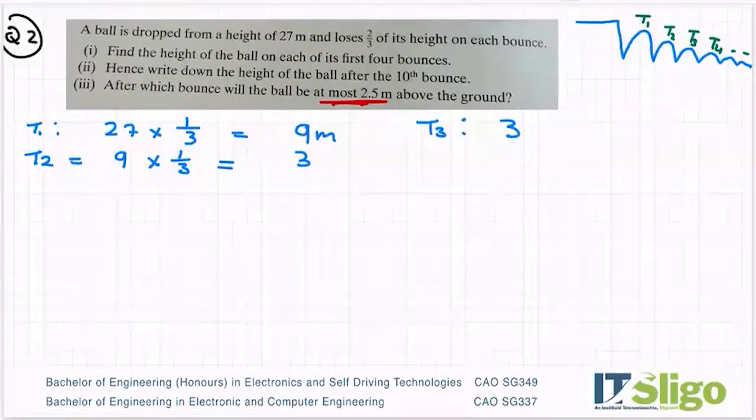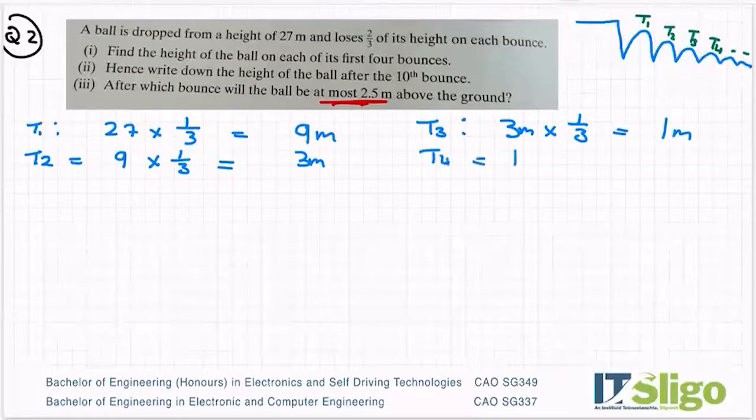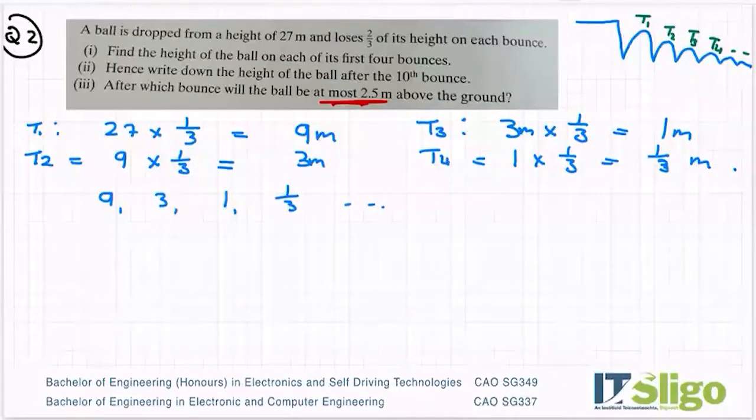T3 will be take that three meters and it will lose two-thirds, so we're down to one meter. And then T4, take that one meter, it'll only have a third left, and so we are down to a third meter. So find the height of the ball on the first three bounces. So I have nine comma three comma one comma a third. So that's part one.